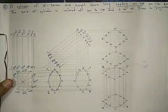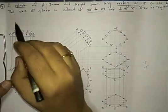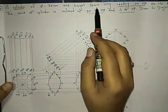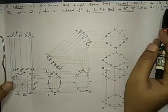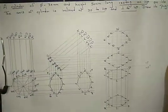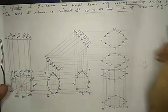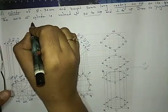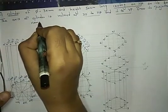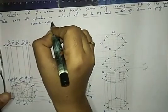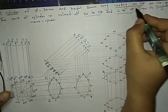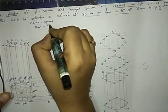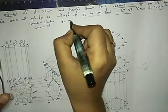We completed three problems, now this is the fourth problem — an important one. The question is: a cylinder of diameter 30mm and height 50mm resting on HP on its base. The axis of the cylinder is inclined at 30 degrees to HP and perpendicular to VP. Draw its projections. The condition is resting on HP on its base, so we start the problem on HP. The inclination is 30 degrees to HP.